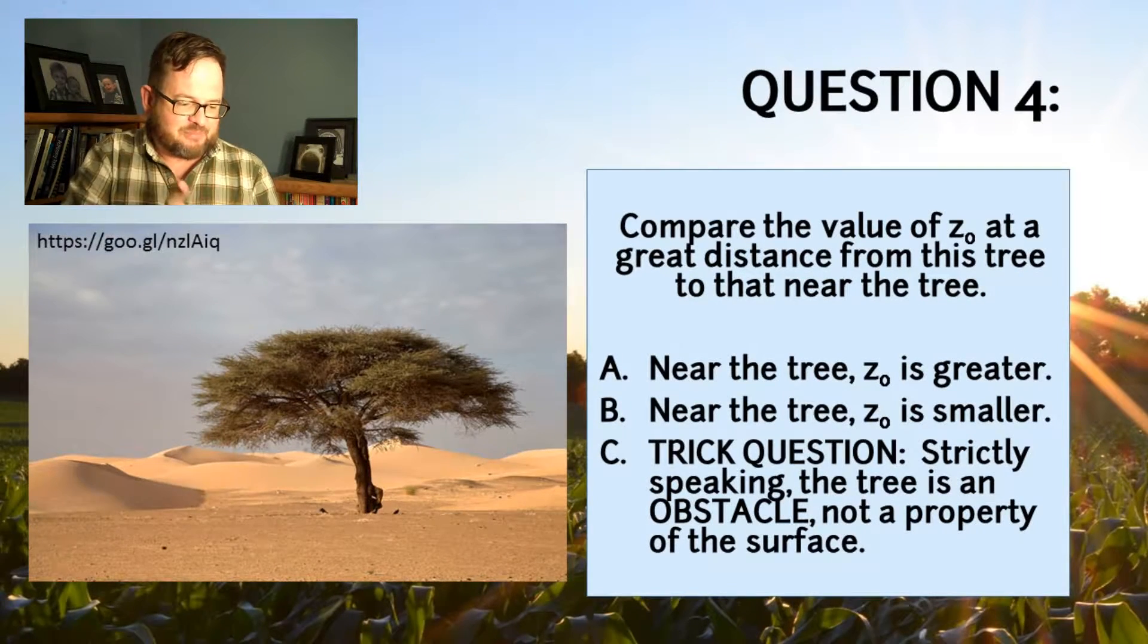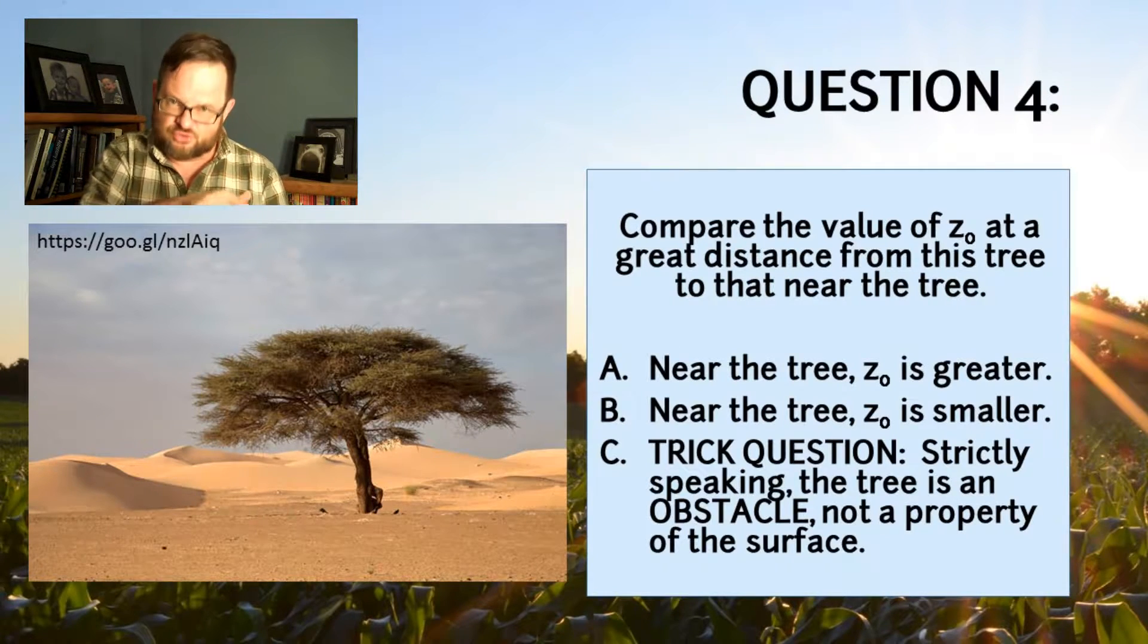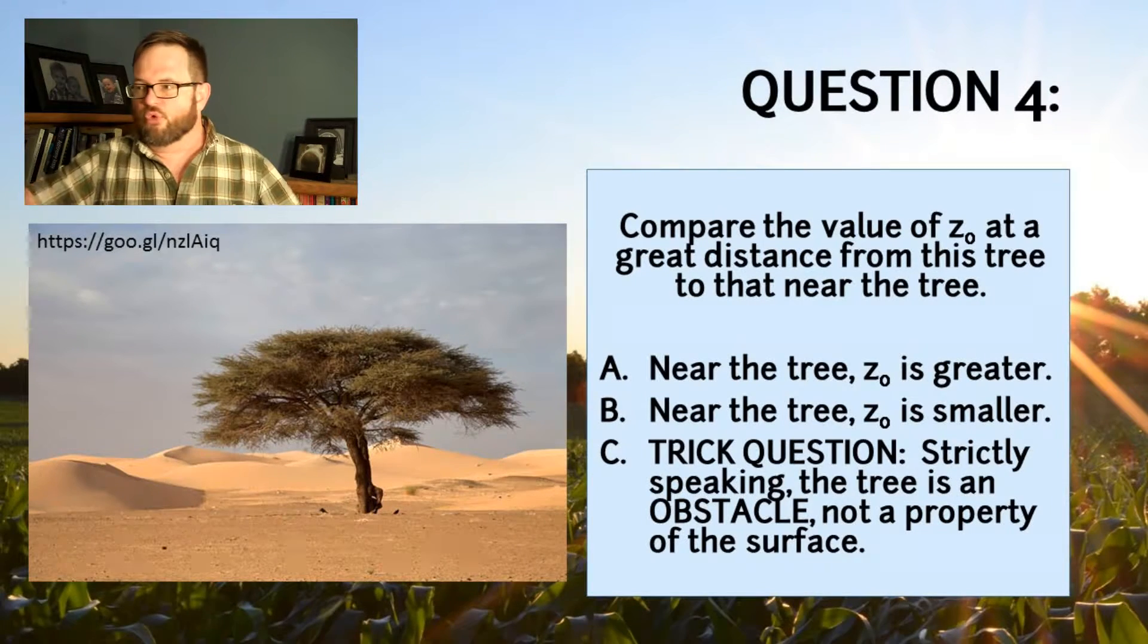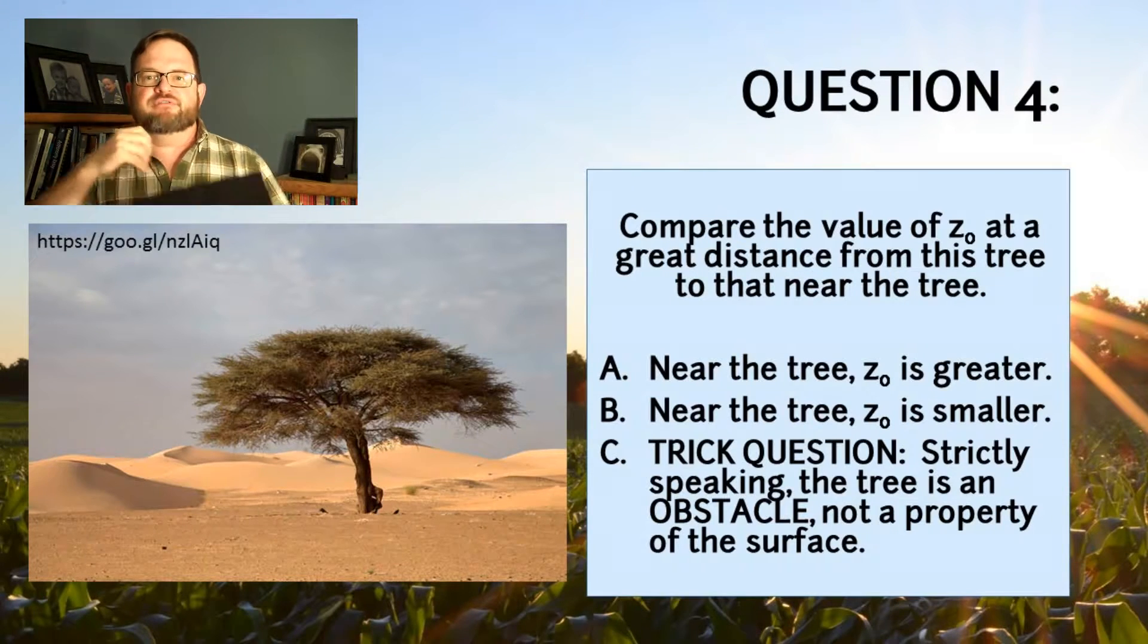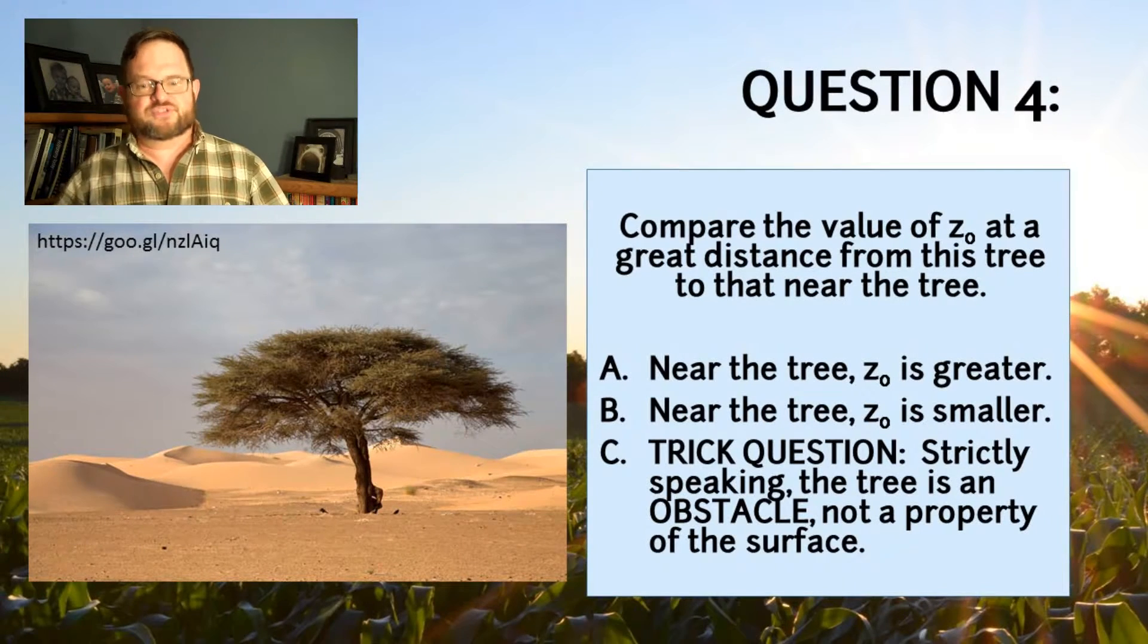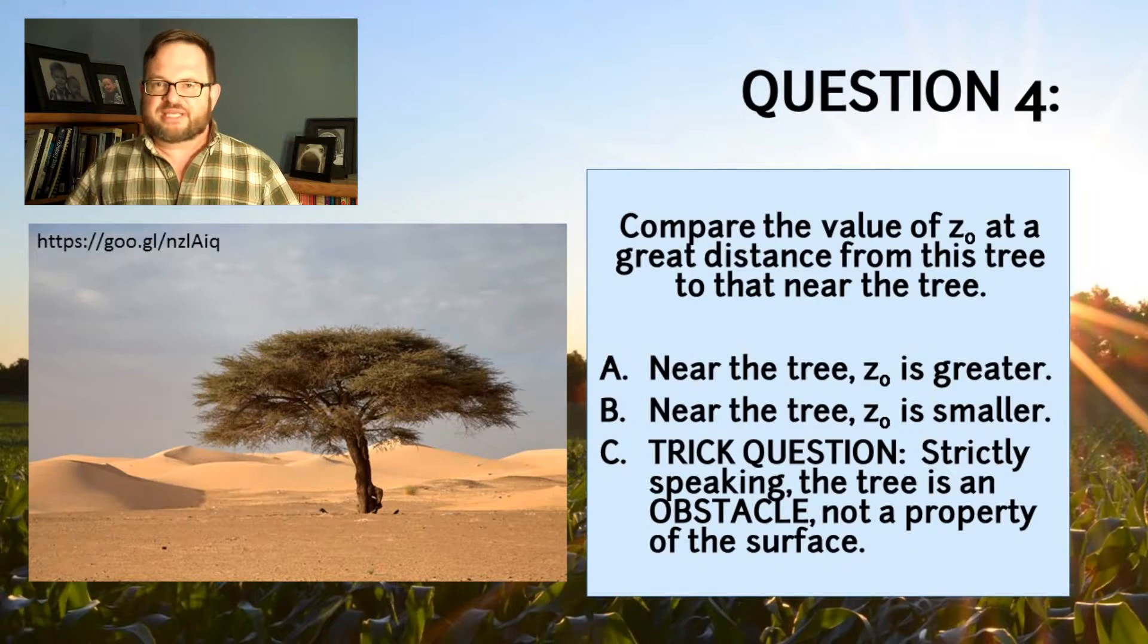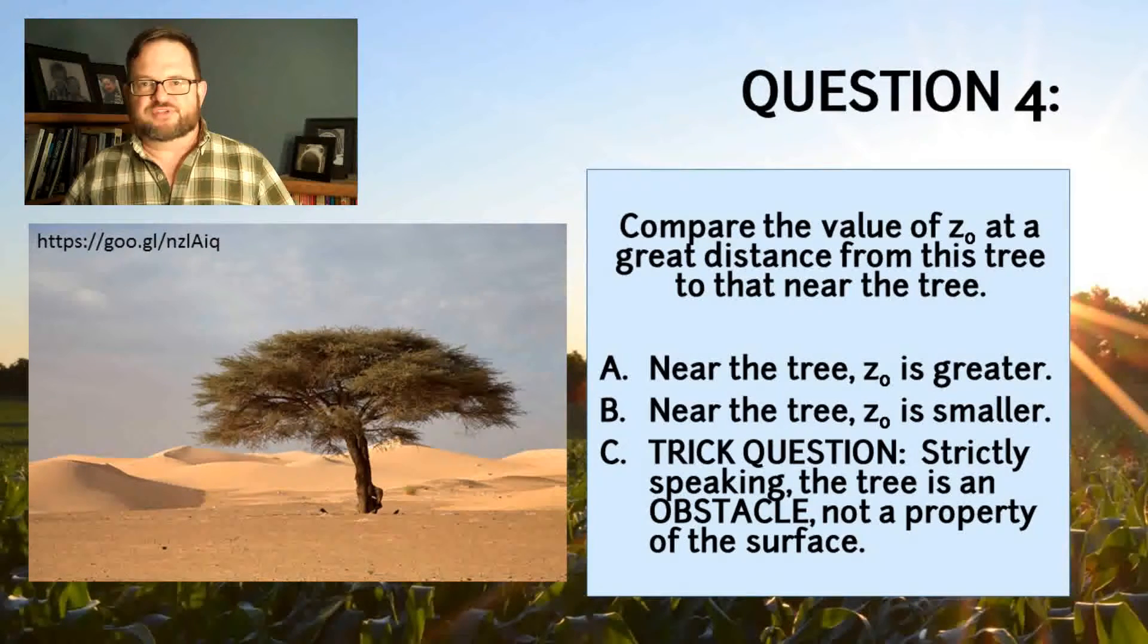The surface gets its properties from the sand and rocks on the ground, the more or less infinite extent of uniform properties of the surface. The tree is an obstacle. It's not a property of the surface.